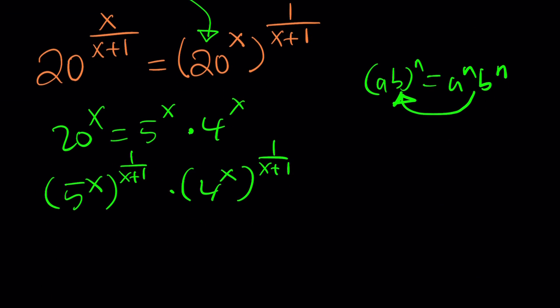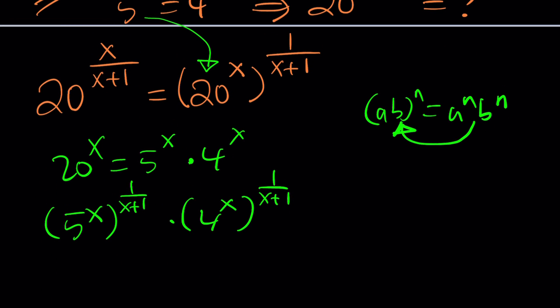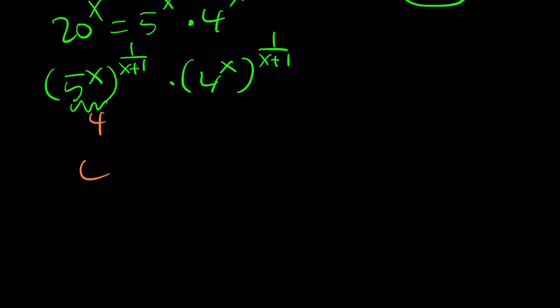Now, we do know that 5 to the x is 4. And we can kind of replace this with 4, which is a good thing to do. That'll help out. So now we can write this as 4 to the power 1 over x plus 1. And this one as 4 to the power x over x plus 1. We got the same base. Beautiful. Now, we can go ahead and combine these. Add the exponents. We get 4 to the power 1 over x plus 1 plus x over x plus 1.